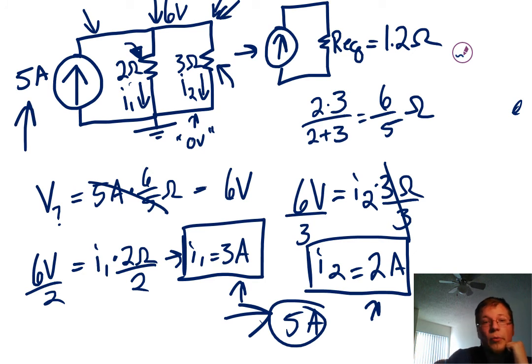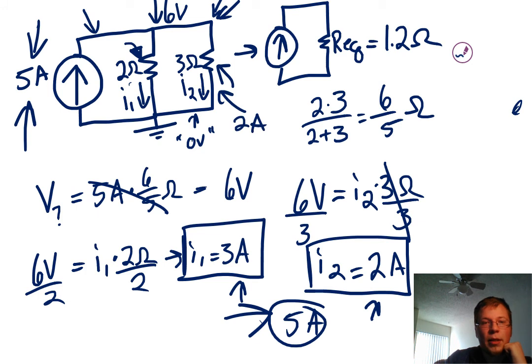So that's the current divider — we divided the 5-amp source into 2 amps coming down the second branch and 3 amps coming down the first branch.